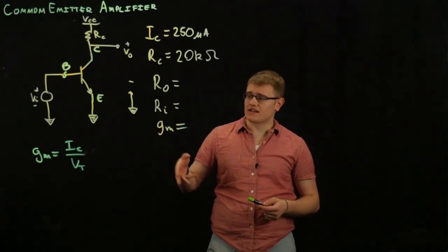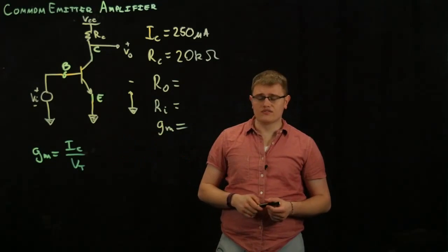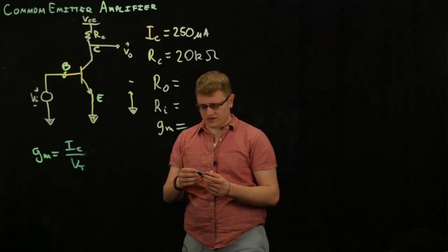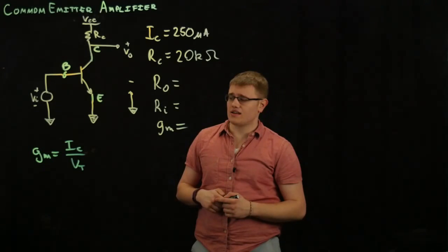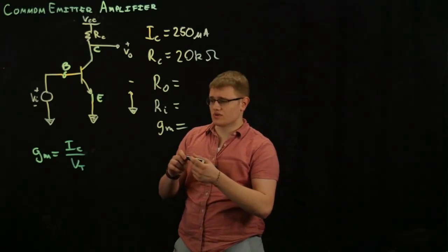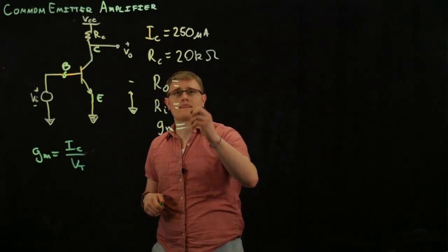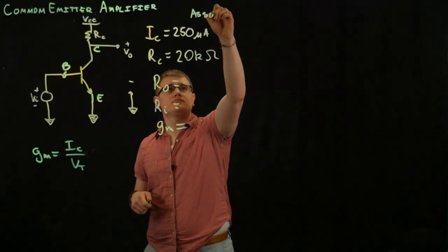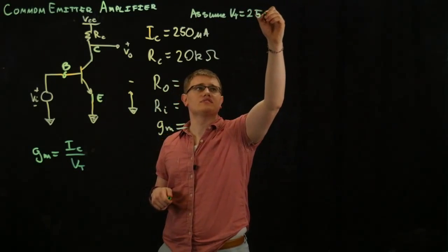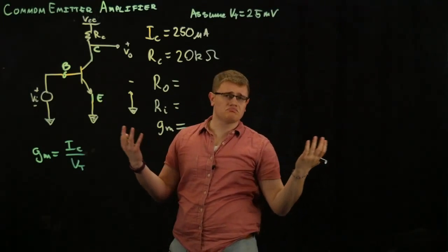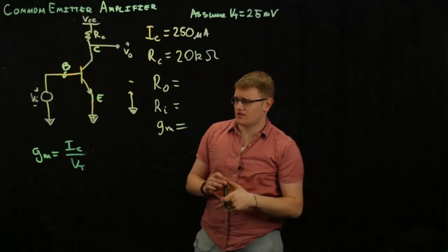In this case, before we write down the rest of the equations, we could just solve GM right now. That's transconductance. We know IC. It's 250 microamps. And we know VT because we're assuming VT equals 25 millivolts. Some say 26, we'll say 25.